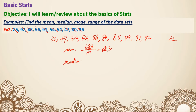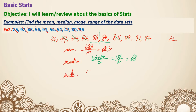For the median this time it's a little different because we have an even amount of numbers. Start crossing out from both ends: 36 and 92, 47 and 91, 54 and 88, 54 and 85, and then 56 and 80 — nothing is left. When we have an even amount of numbers, the median is the average of the two middle numbers. So 56 plus 80 divided by 2 equals 136 divided by 2, giving a median of 68. Mode is 54 — it appeared twice. Range is 92 minus 36, which equals 56.